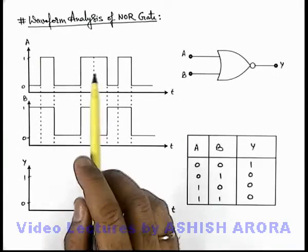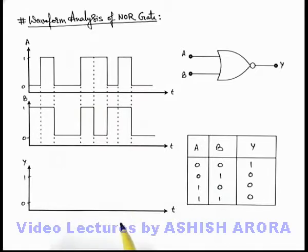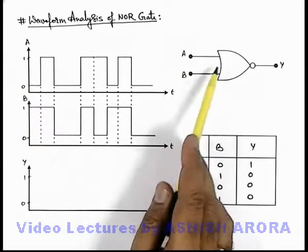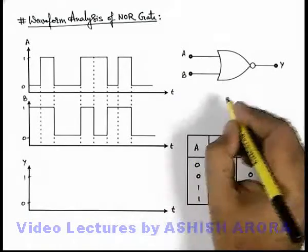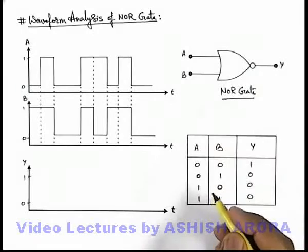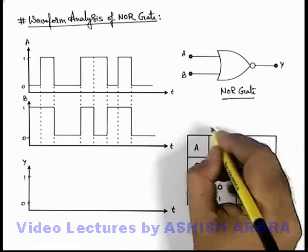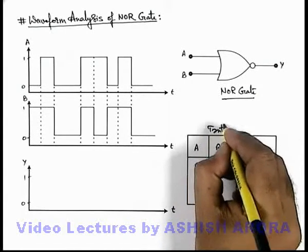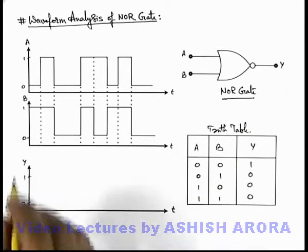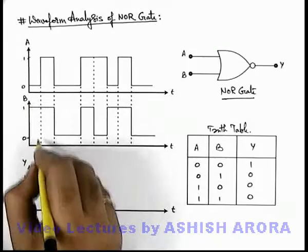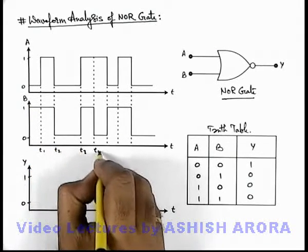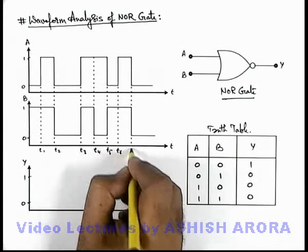Let us now do the waveform analysis of the NOR gate. Here, A and B are two digital signals applied as input of this NOR gate, and we'll analyze the waveform output at terminal Y according to the truth table we discussed in the previous section. We can see various time intervals: t1, t2, t3, t4, t5, t6, and t7.